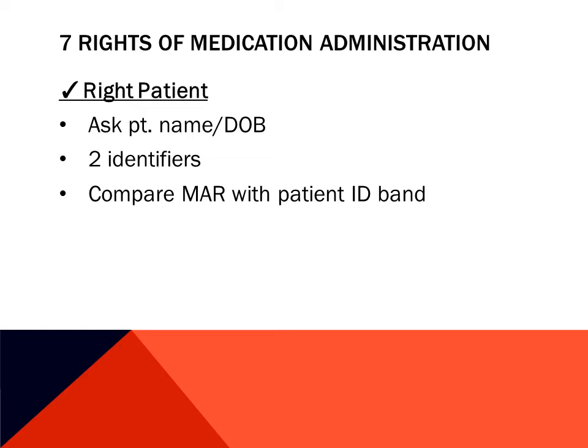First is the right patient. Prior to medication administration, you need to identify your patient. You need two identifiers like the patient's full name and date of birth prior to giving any medication. Their room number is not an identifier. You should also compare the medication record with the patient's ID band. This is especially important when you have geriatric or pediatric patients.